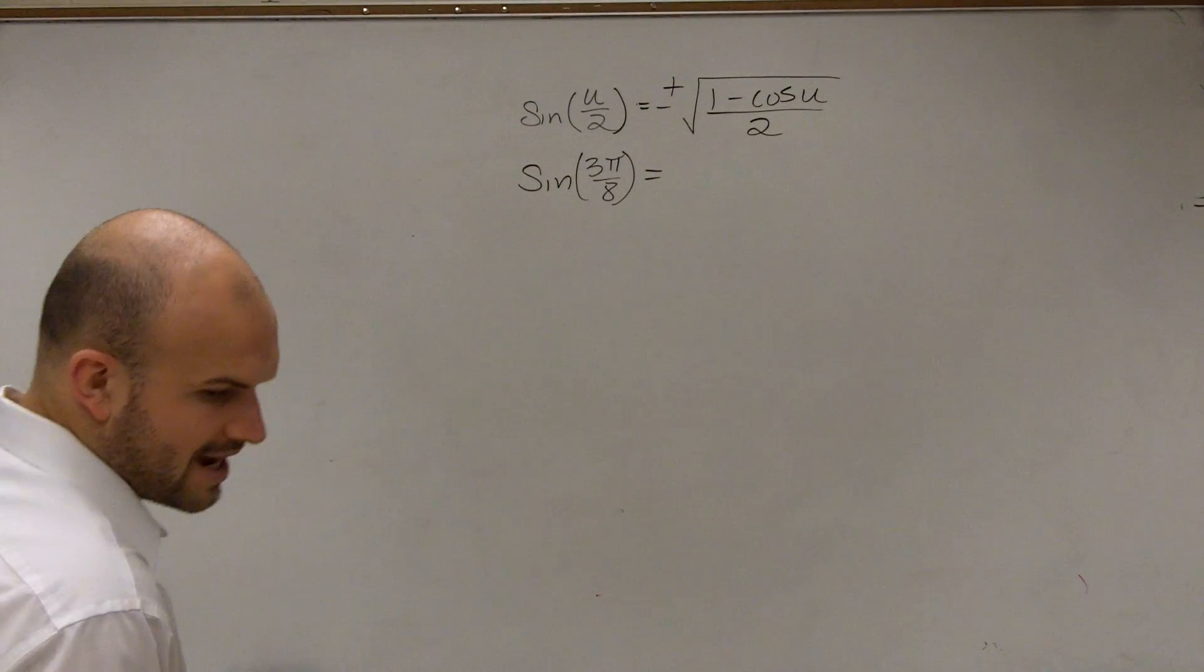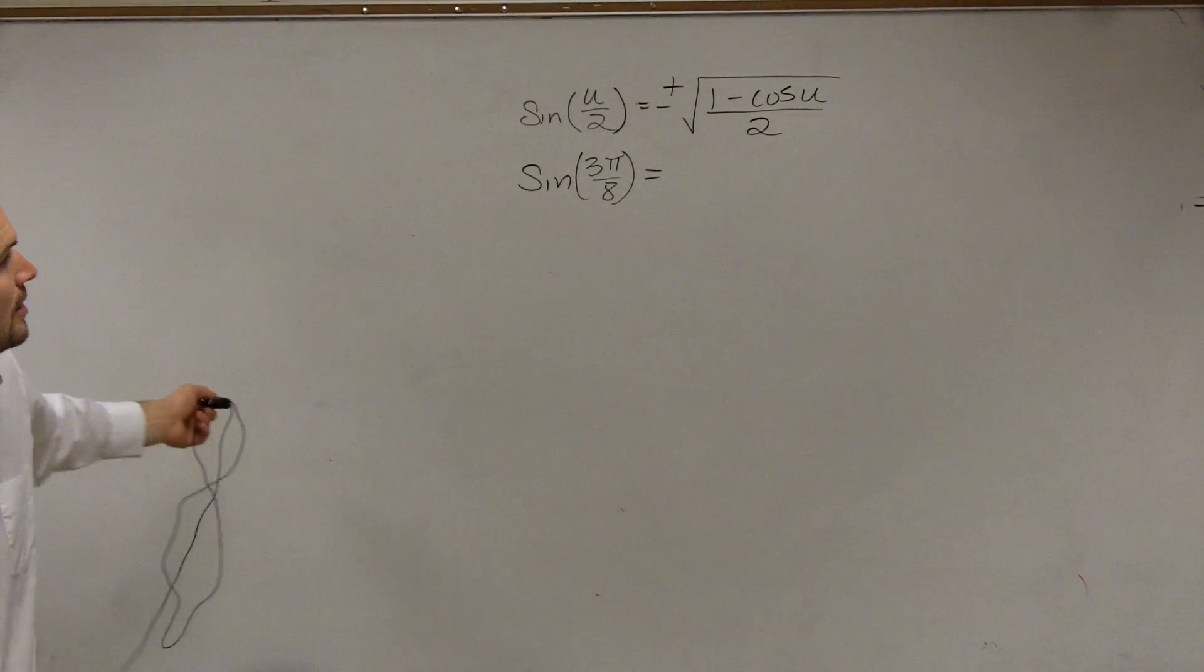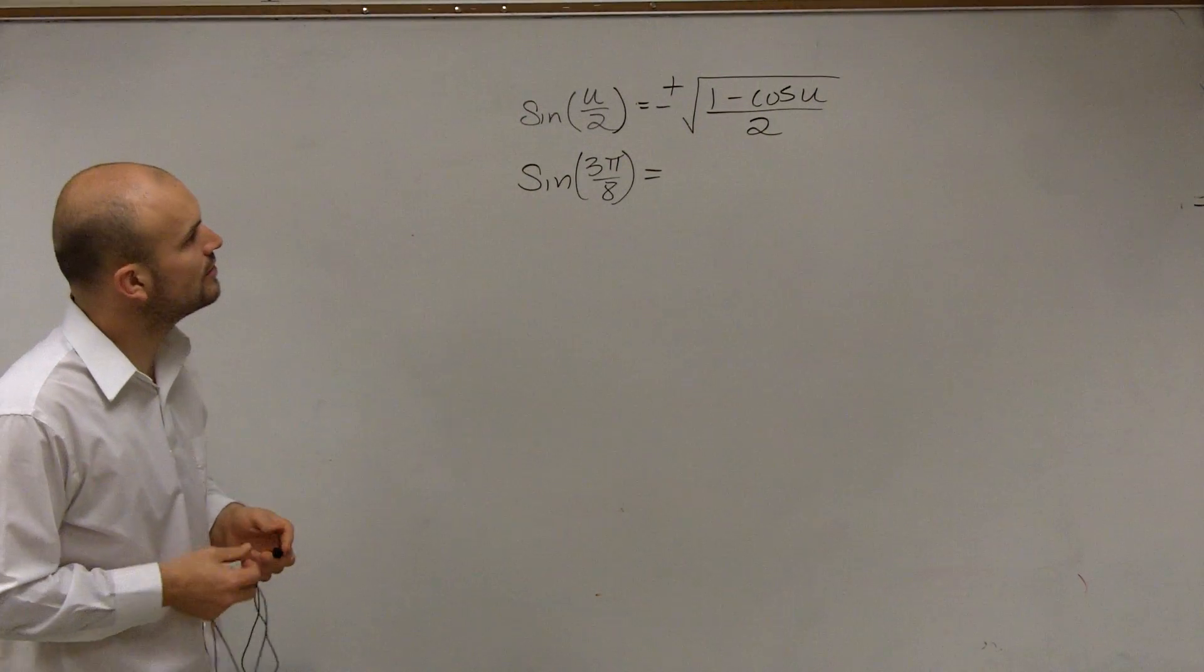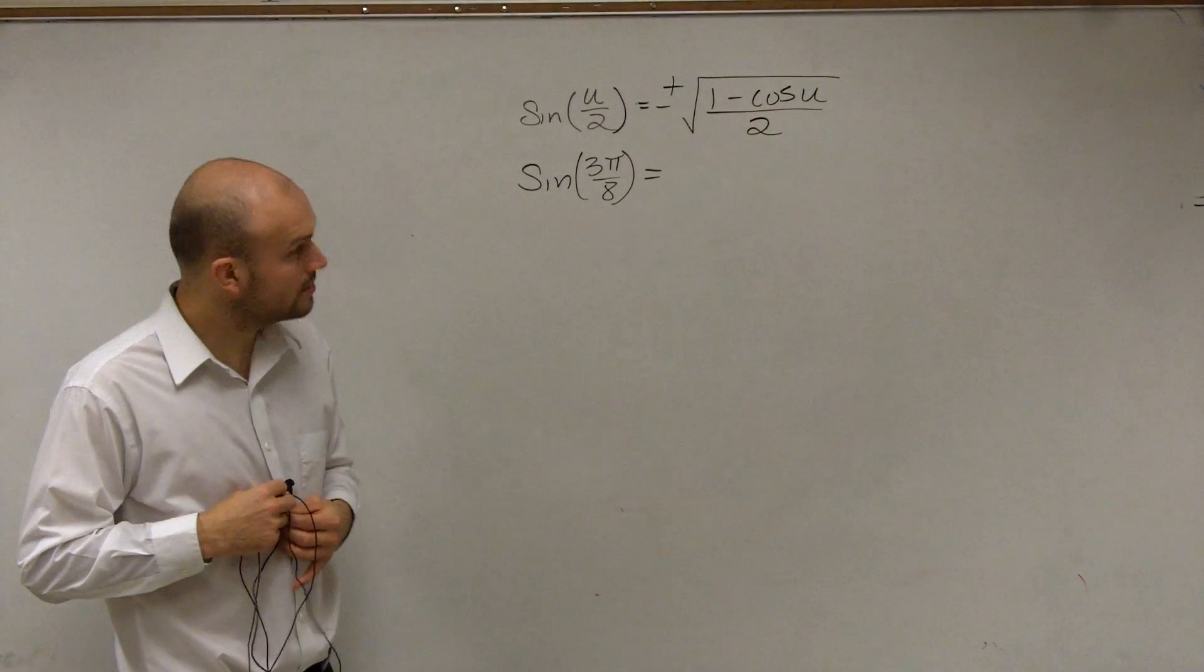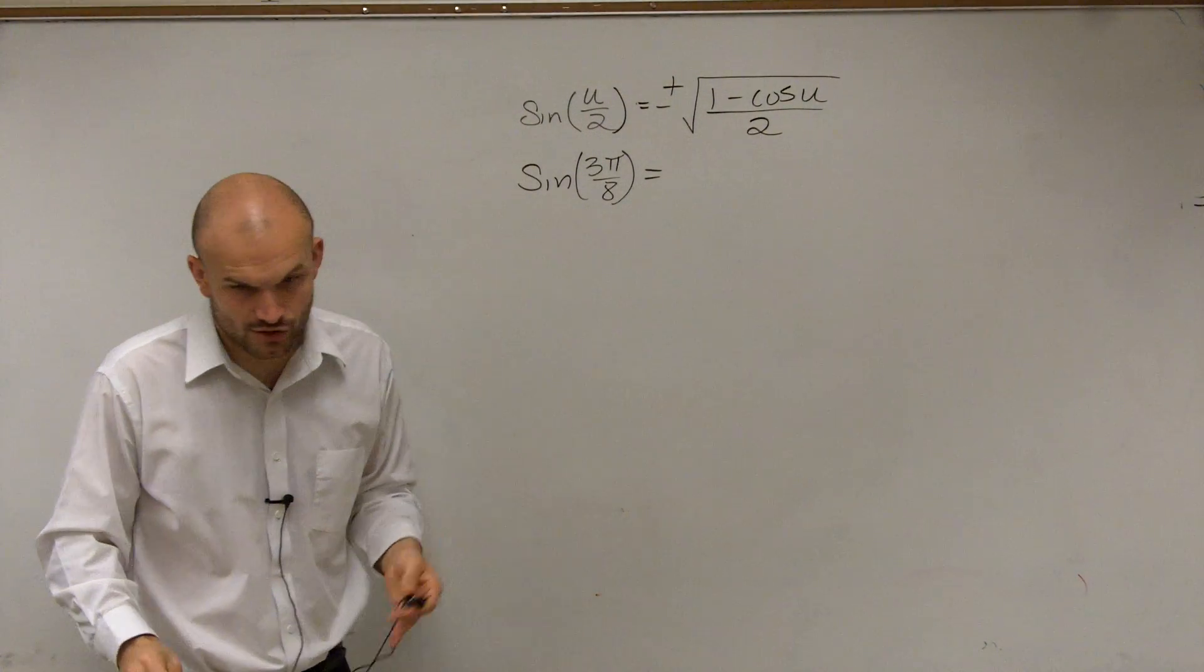When completing a problem like this, ladies and gentlemen, we have the half-angle formula, which says sine of u divided by 2 is equal to plus or minus the square root of 1 minus cosine of u divided by 2.